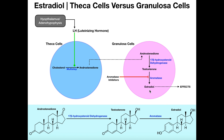Hopefully this video gave you a good understanding of theca cells and granulosa cells. The theca cells are really just making androstenedione and sending it over to the nearby granulosa cells, which finish the job with the last two steps — with the last one being the most important for the production of estradiol.